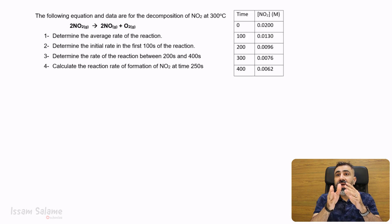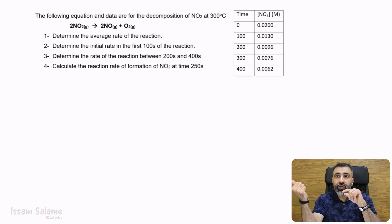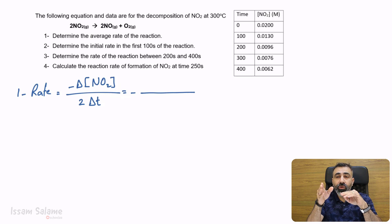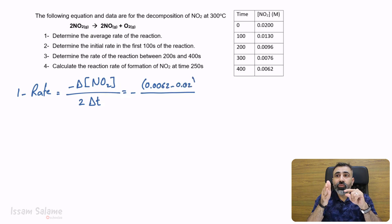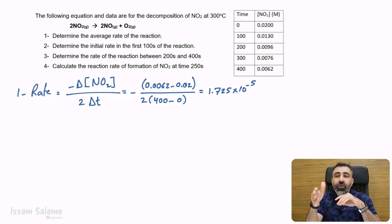The first question: we have to determine the average rate for the reaction. The average rate means we take T final as the last time recorded, which is 400, and T initial as the first time recorded, which is time T zero. The rate is equal to negative delta concentration of NO2 over 2 delta T — negative because NO2 is a reactant, and divided by 2 delta T because 2 is the coefficient in the balanced chemical equation. So we replace: concentration final is 0.0062 minus concentration initial 0.02, divided by 2 into (400 minus 0). The answer is 1.725 times 10 to the power negative 5 molar per second.